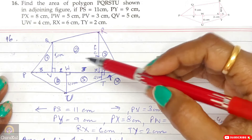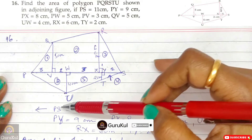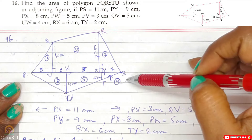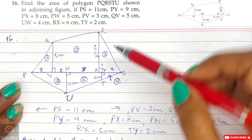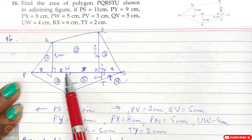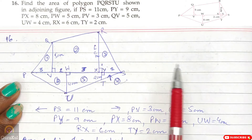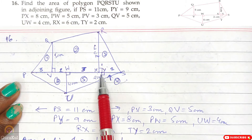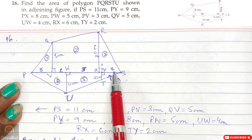Question number 16: Find the area of polygon PQRSTU. PS = 11 cm (the full length). PY = 9 cm, so YS = 11 − 9 = 2 cm. PX = 8 cm, so XY = 1 cm. PW = 5 cm, PV = 3 cm, so VW = 2 cm. The perpendiculars are QV = 5 cm, UW = 4 cm, RX = 6 cm, TY = 2 cm.